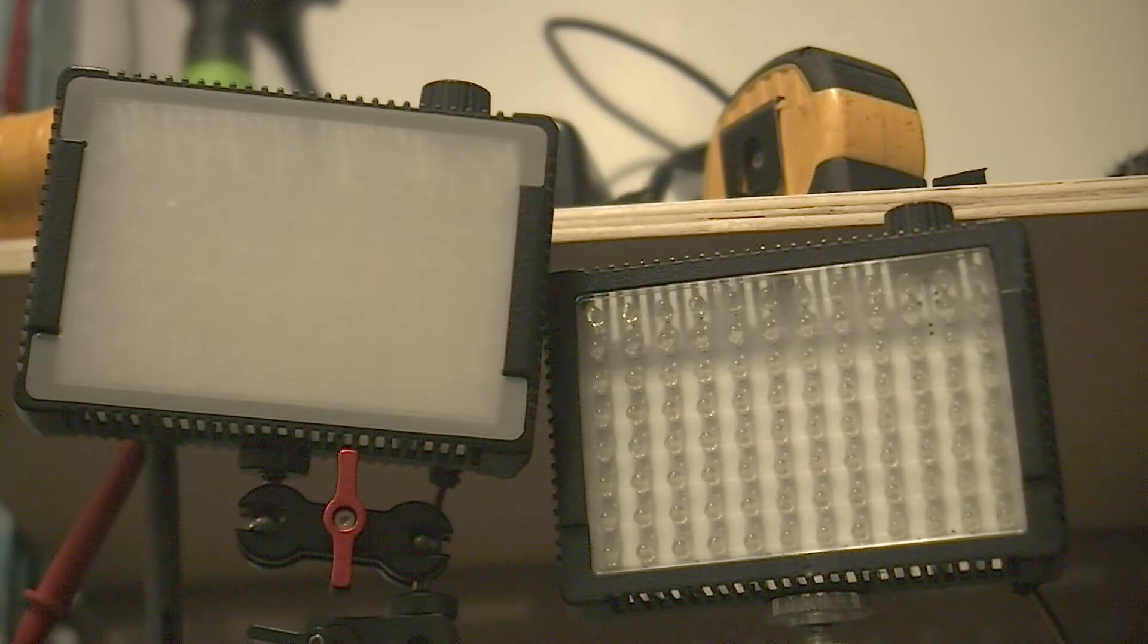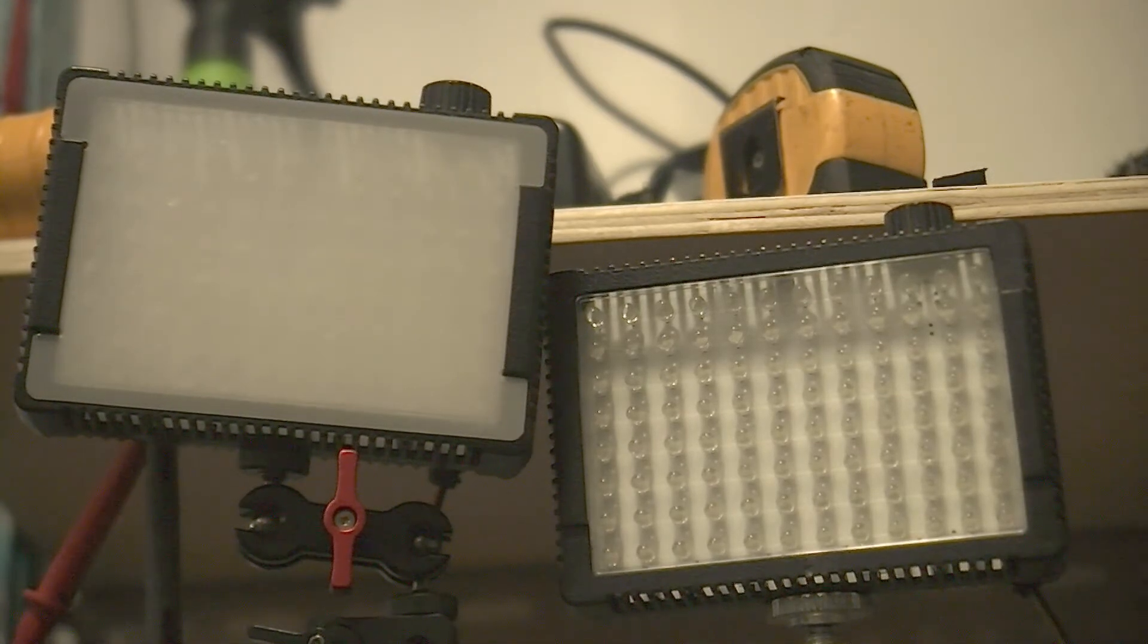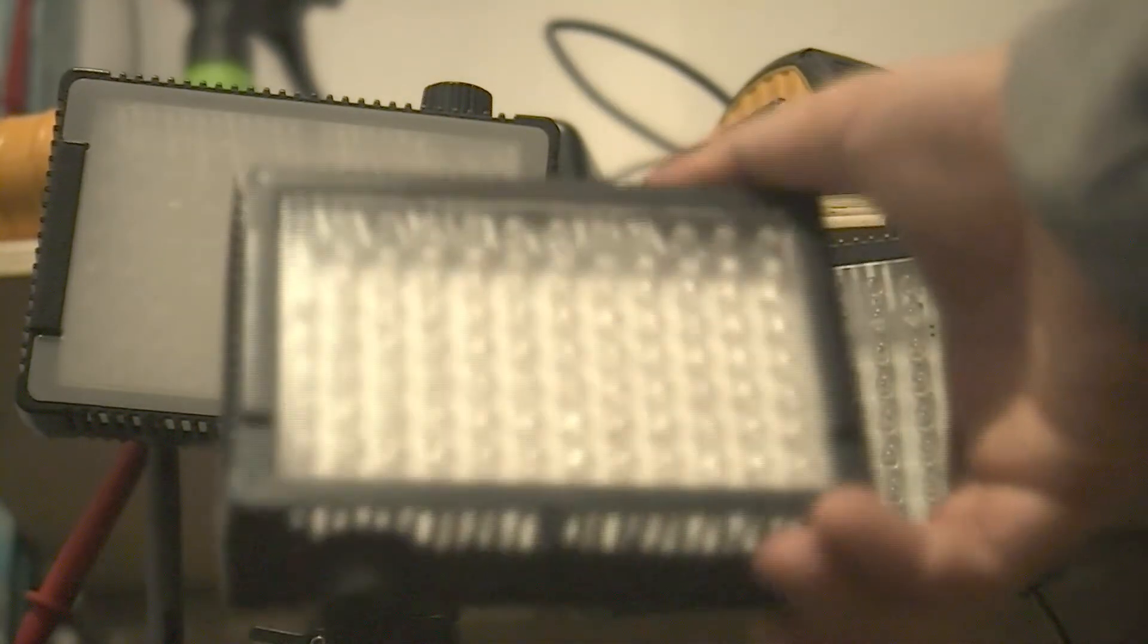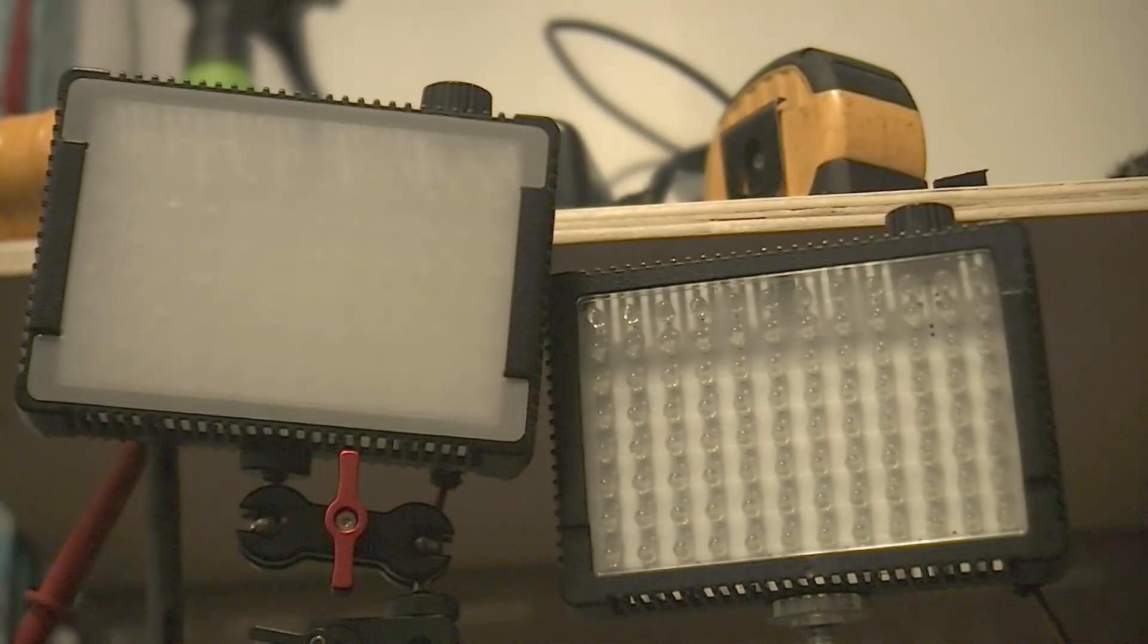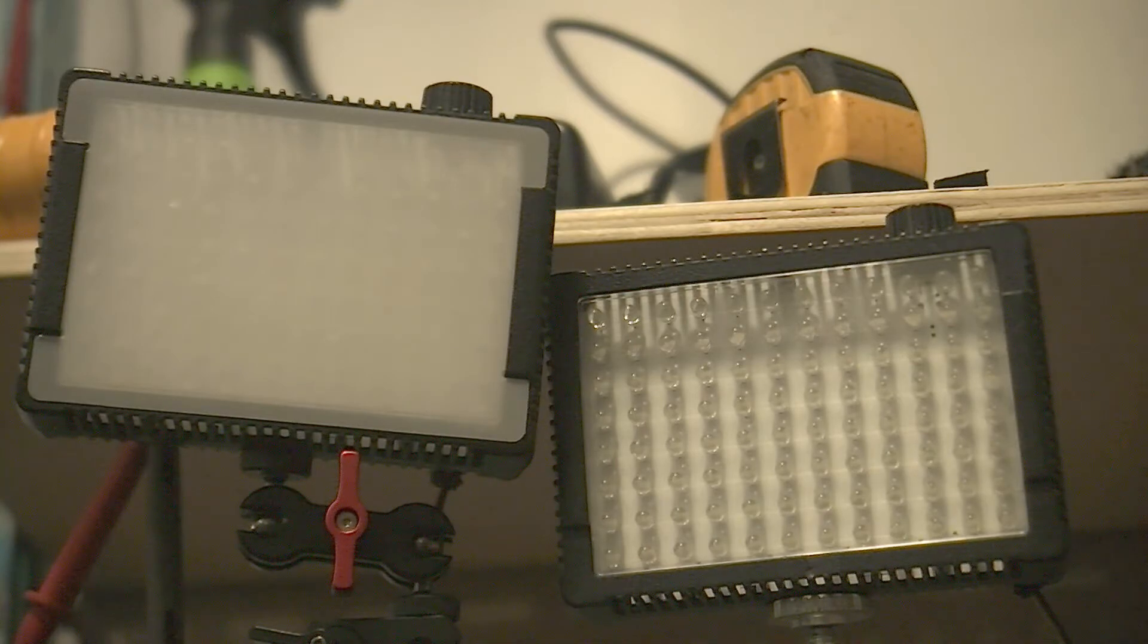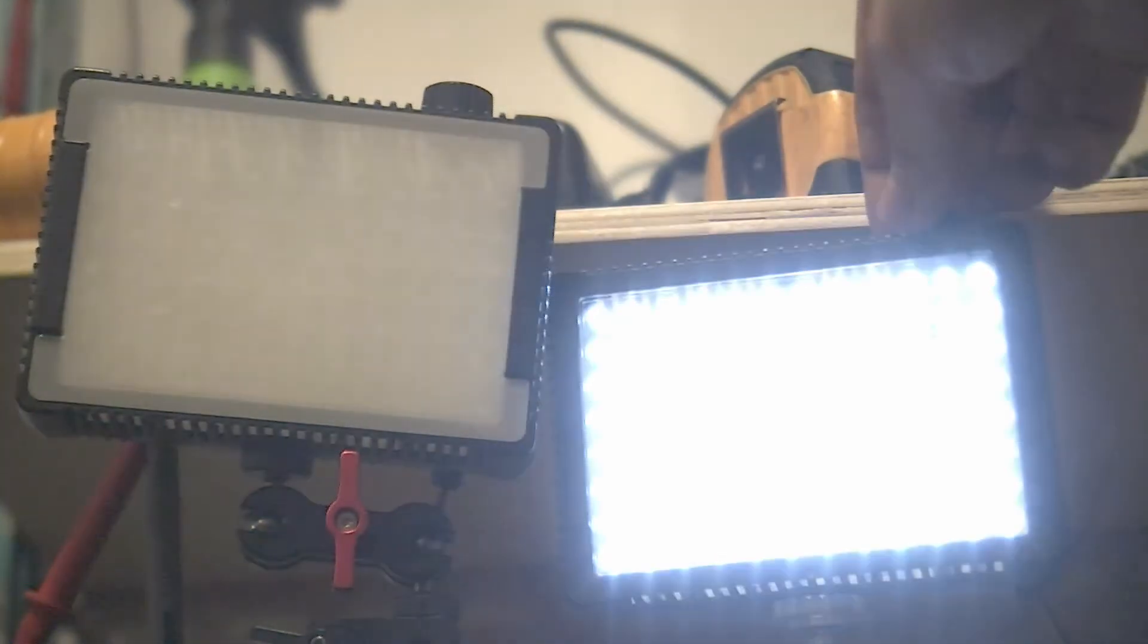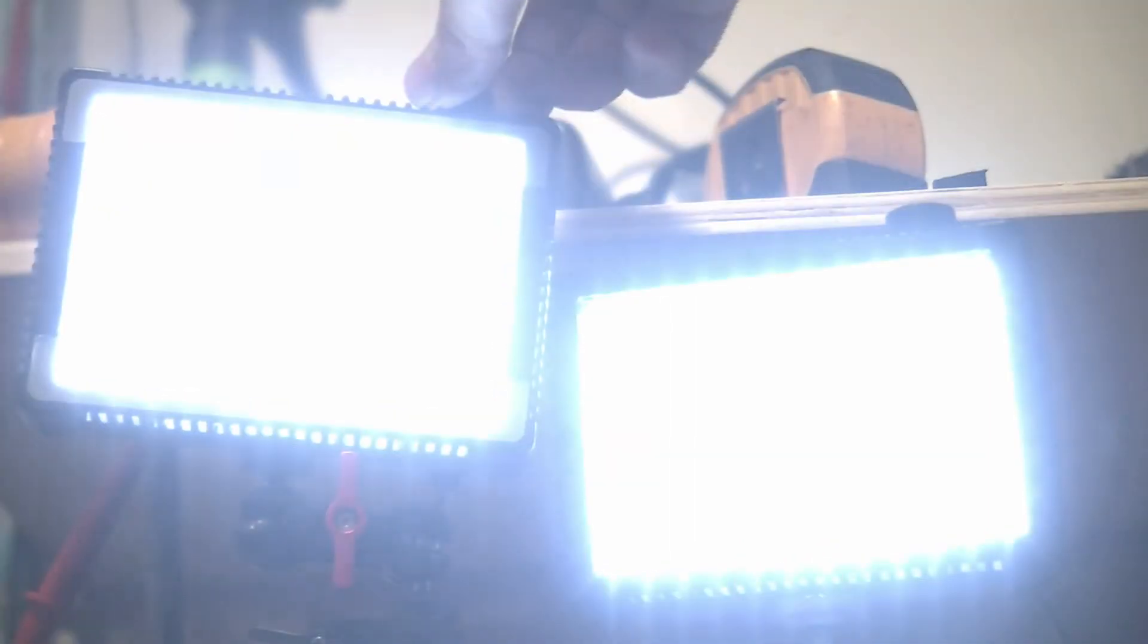So the problem is the lights are nice and light themselves, they're pretty light. When you load them up with batteries, they're a lot heavier. And also when you run them on batteries, they flicker, which is not good at all. If I run them with DC direct current, like I'm doing right now, there's no flickering involved at all.